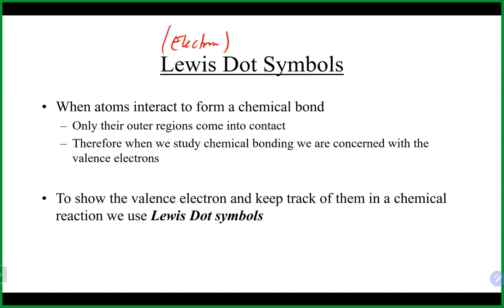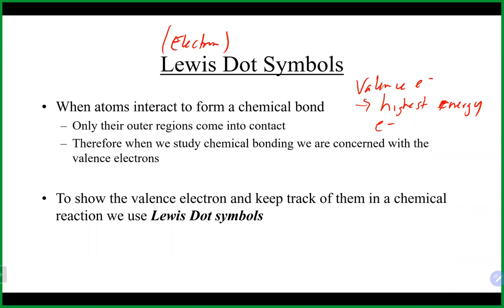When a bond forms, the only things involved are electrons — specifically the outer electrons, which are referred to as the valence electrons. Valence electrons are the highest energy electrons; they're the ones furthest away from the nucleus, which means they're not held as tightly. They will either be transferred or shared between two atoms.